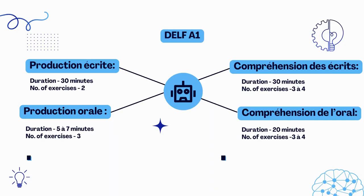Let's discuss the DELF A1 exam pattern. Production Écrite, that is the writing section — you will be getting 30 minutes to complete this section. There will be two exercises: you need to fill out a simple form with your name, surname, nationality, age, etc. The second exercise is writing an informal letter with a word limit of 40 to 50 words.